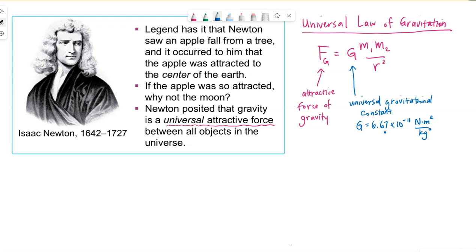It is a very small number, which partially explains why to have an obvious force of gravity, one of the objects needs to be extremely massive. M1 and M2 are the two objects involved in the gravitational attraction. R is the distance from center of mass to center of mass.